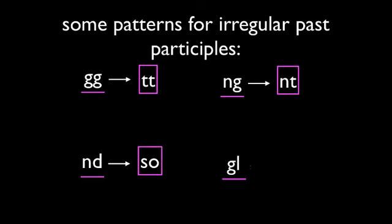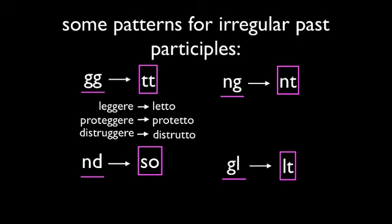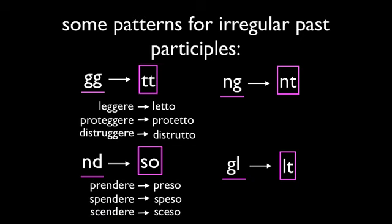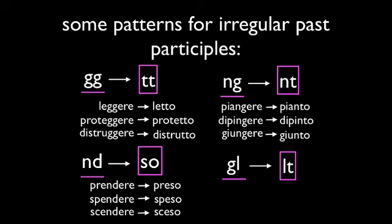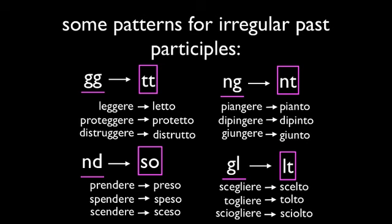Here are some patterns. Again, this is only a few — most irregular past participles are just so irregular there's no point talking patterns, but maybe some of these will help. For example, GG becomes TT in the past participle: LEGGERE becomes LETTO, PROTEGGERE becomes PROTETTO, DISTRUGGERE becomes DISTRUTTO. Or ND becomes SO: PRENDERE becomes PRESO, SPENDERE becomes SPESO. And NG becomes NT: PIANGERE becomes PIANTO, DIPINGERE becomes DIPINTO, GIUNGERE becomes GIUNTO. Finally, GL becomes LT: SCIOGLIERE becomes SCIOLTO, and so forth.